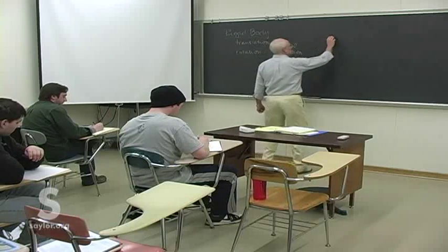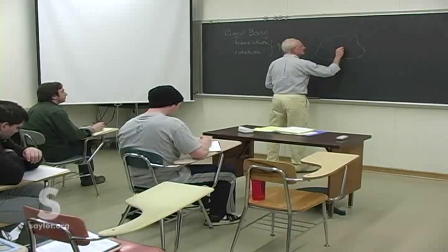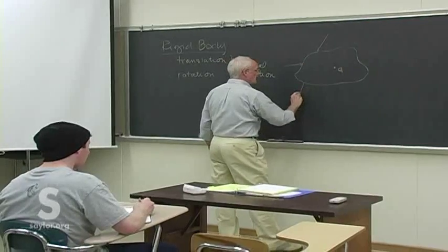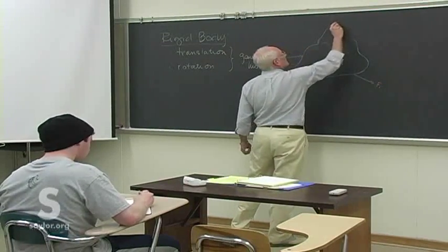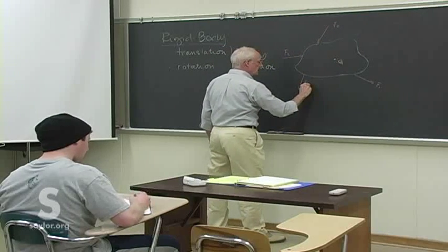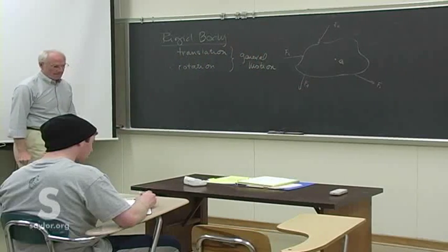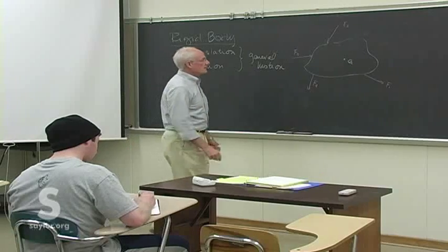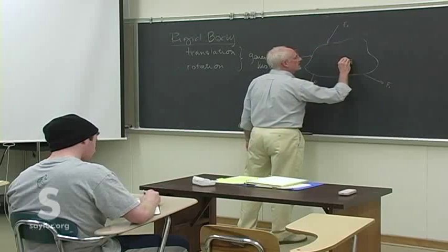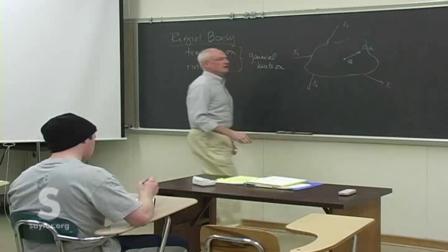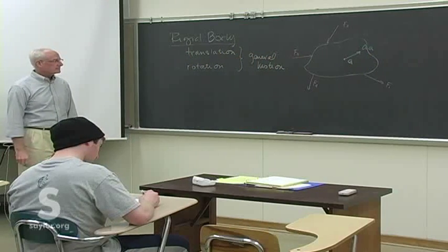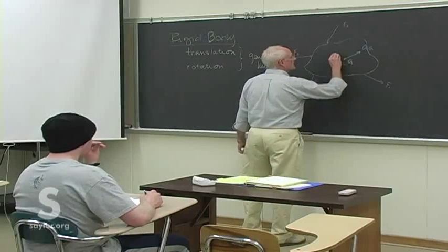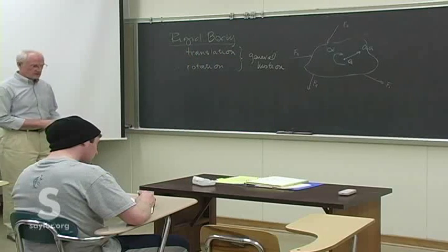So the deal is: if we've got some object with a center of gravity subject to any types of forces — any magnitude, any number, any direction — those are going to cause, assuming there is a net force, some acceleration of the body. But if there is also a net torque, there can also be some kind of rotation. We'll look at the possibility of the two of those together now.